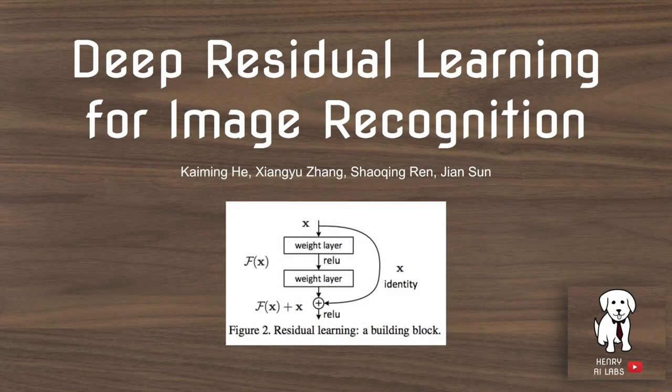This video will explain the ResNet, a deep convolutional neural network architecture design. This is one of the most popular neural network designs that have ever been published, with over 20,000 citations.